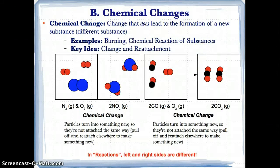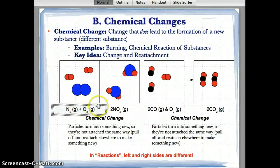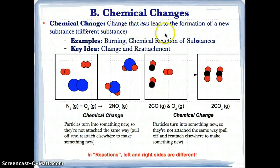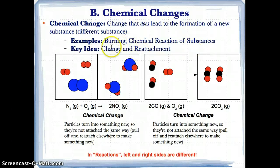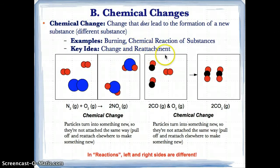On the other hand, a chemical change is a change that does lead to the formation of a new substance — a different substance. Examples include burning, chemical reactions of substances, and rusting. With burning, you're reacting something with oxygen in the air, making it change into something else. When you react substances chemically, you're combining them in a way that changes what they are. The key idea is you're changing what it is and actually pulling apart and reattaching the particles.